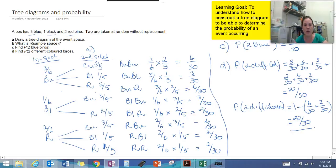Okay guys, so that's how you determine the probability of an event occurring using a tree diagram. Thanks very much.